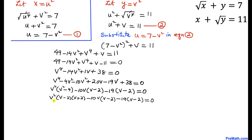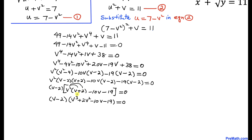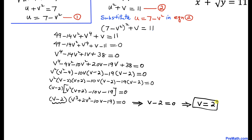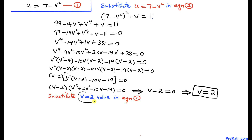We can see (v minus 2) is a common factor, so factoring it out gives: (v minus 2) times [v squared times (v plus 2) minus 10v minus 19] equals 0. Distributing v squared inside gives a cubic polynomial. Setting each factor to zero, from (v minus 2) equals 0, we get v equals 2.